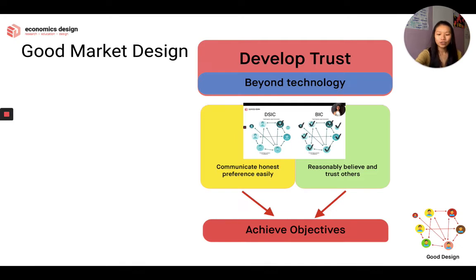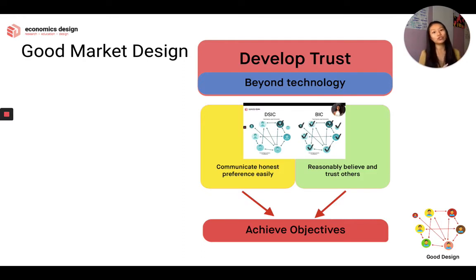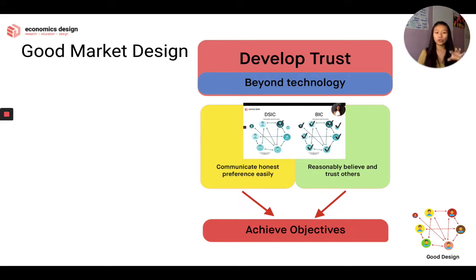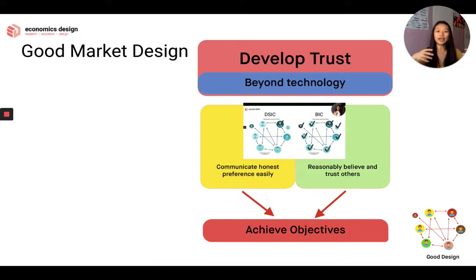What's good market design? Good market design allows trust to develop — trust beyond the technology. We talk a lot about DLT as a trustless system because we can trust the technology; everything's distributed and we can trust the information. But how can we trust the people in the space? There are two ways: one is to communicate honest preferences easily, and the other is to reasonably believe and trust others. We talked about something like this in lesson two on incentive compatibility — DSIC (dominant strategy incentive compatibility) and BIC — where people feel safe enough to communicate their honest preferences.